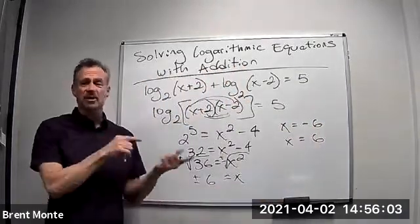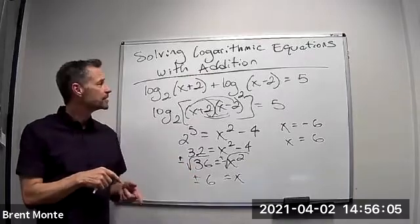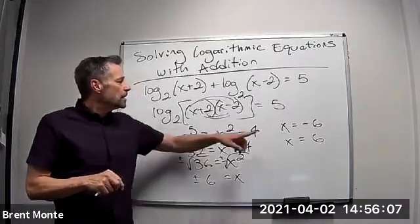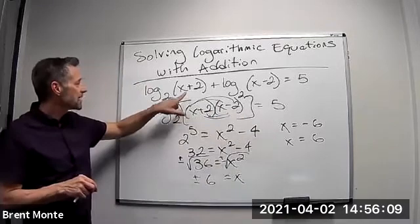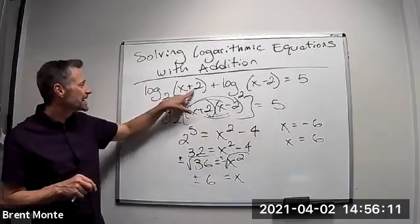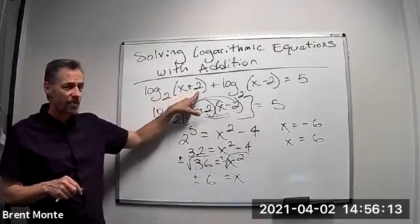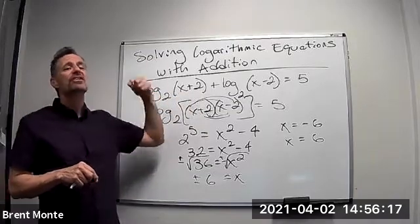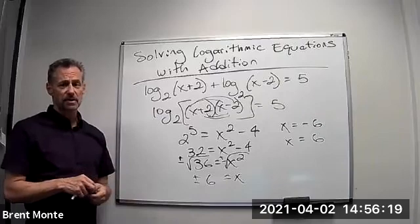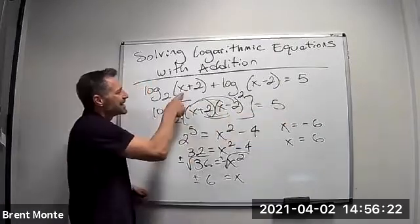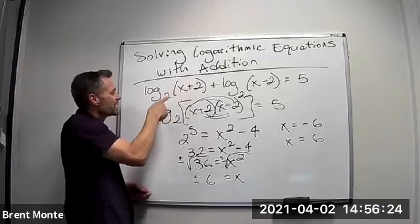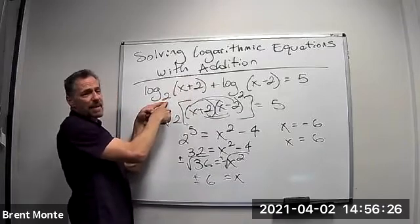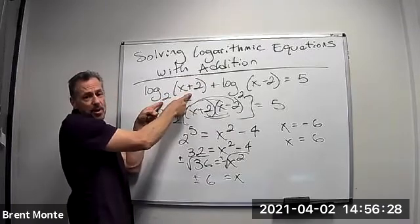But I always have to check to make sure neither of those answers is extraneous. If I take the negative 6 and I plug it in here, I've got log base 2 of negative 6 plus 2 is negative 4. Remember the domain of the log function, I can't take the log of negative numbers. So the argument can never be negative. So if I plug negative 6 in here, it makes me take the log of a negative number. 2 to any power is never going to equal negative 4. That's impossible.